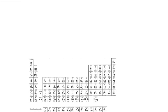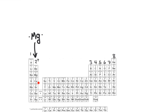How many valence electrons does magnesium have? It's in group 2, so it has 2 valence electrons. To follow the octet rule, it would need to gain 6 or lose 2. It's always easier for metals to lose, so magnesium will lose 2 electrons, giving it a positive 2 charge. Everything in group 2 will have a 2 plus charge. Group 1 will always have a plus 1 charge, group 2 always a 2 plus charge, and group 3 always a 3 plus charge.